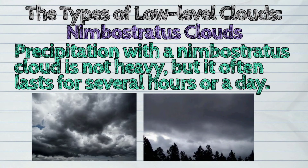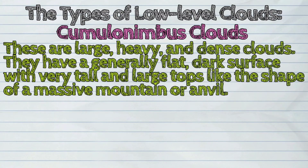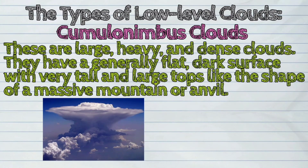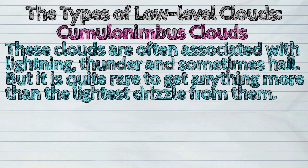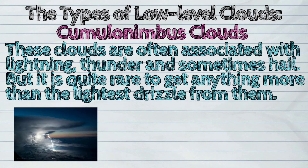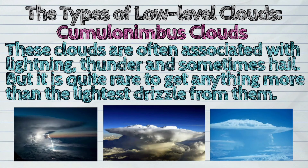And the fifth one is the cumulonimbus clouds. These are large, heavy, and dense clouds. They have a generally flat, dark surface with very tall and large tops like the shape of a massive mountain or anvil. These clouds are often associated with lightning, thunder, and sometimes hail. But it is quite rare to get anything more than the lightest drizzle from them.